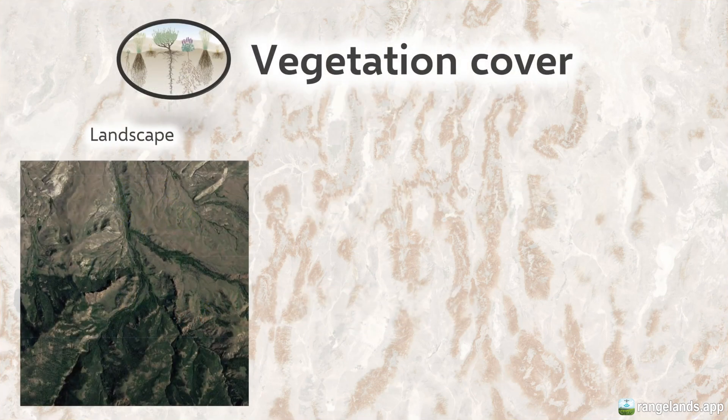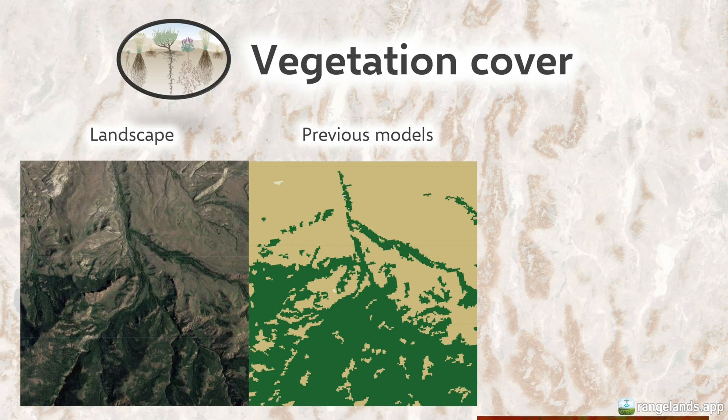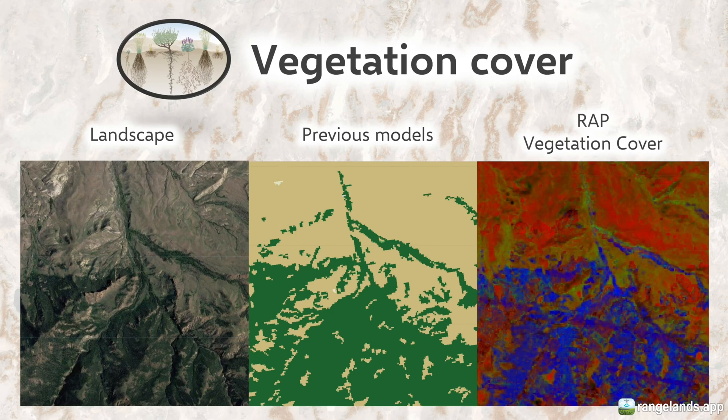Vegetation patterns across western rangelands are complex, yet that variability is fundamentally important to estimating productivity. Previous versions of this model relied on categorical maps of vegetation, meaning that each location could only be classified as purely grassland or shrubland. Here, we use the RAP vegetation cover dataset to get estimates of the different types of vegetation cover.